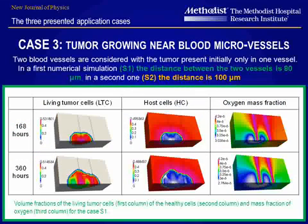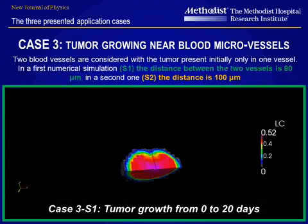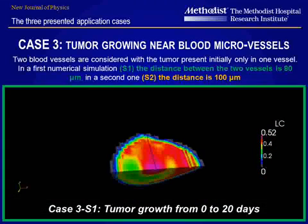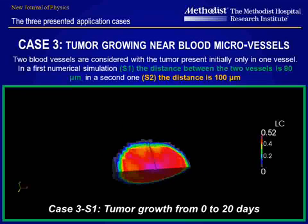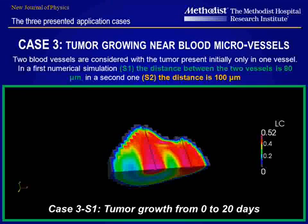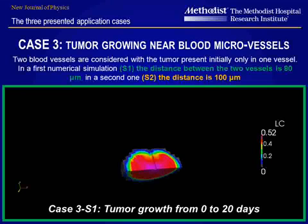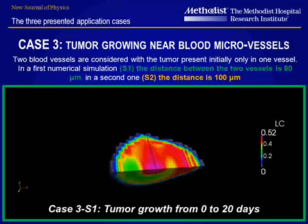The living tumor cells, the host cells, and the oxygen mass fraction are shown for the case of an 80 micron distance from the blood vessels at 168 and 360 hours, respectively. For the same case, we show the tumor growth for the first 20 days. It can be seen clearly that the tumor grows toward the second blood vessel, which is a new source of nutrient. At the same time, necrotic cells appear away from the nutrient source.